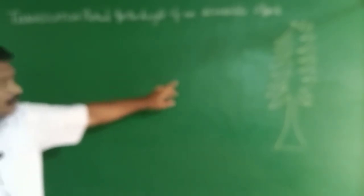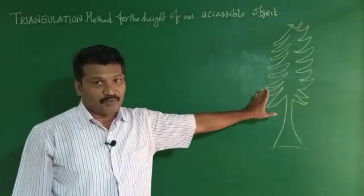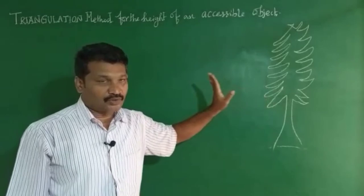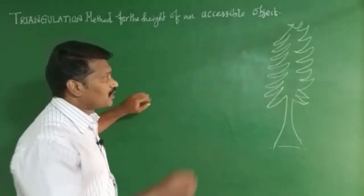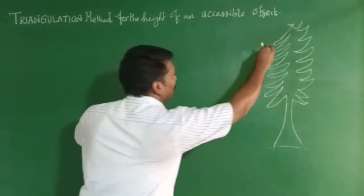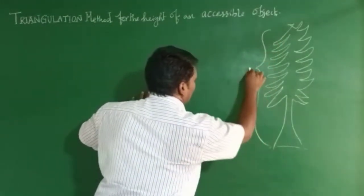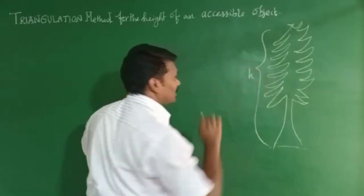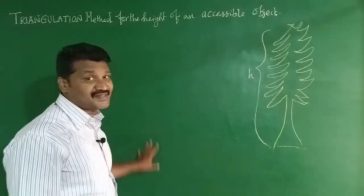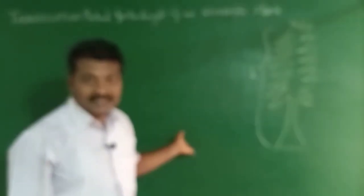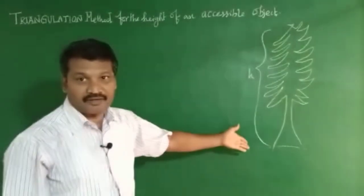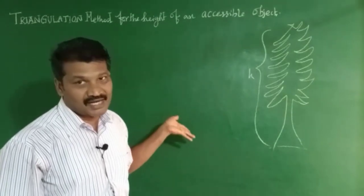Hi students, we are going to talk about the triangulation method for the height of an accessible object. Consider a tree or building. We have to measure the height of the tree, as well as the distance from the tree where we can stand.